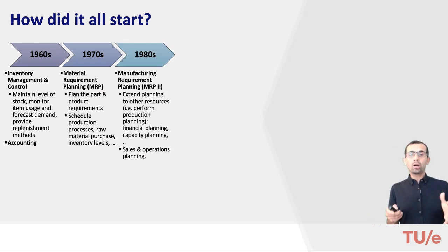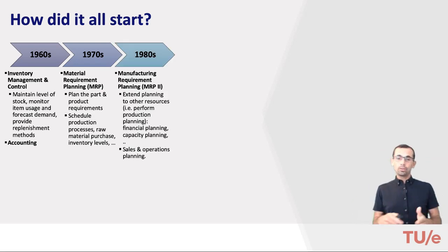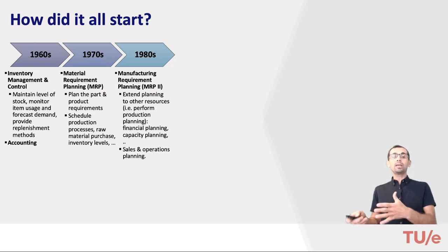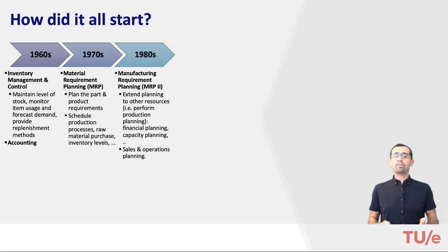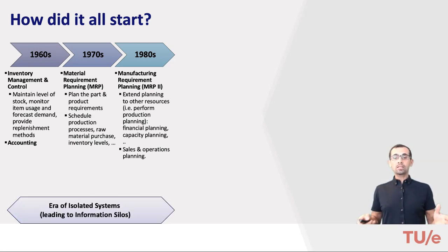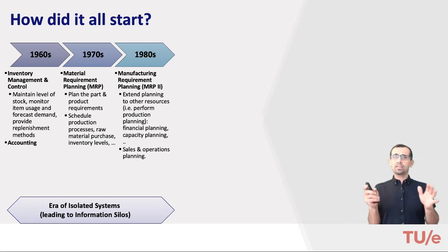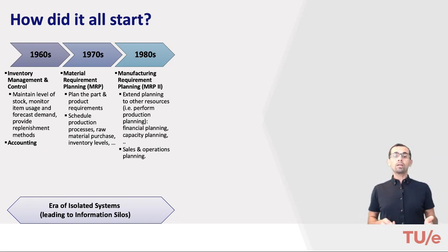In the early 1980s, the idea of MRP was extended to include the planning of not only material but also other resources like human capacity, machine capacity, and finance. This even extended to sales planning as well. This entire era of such systems is characterized by the term 'information silo,' which has a rather negative connotation. Let's talk about this problem of information silos before we go further.